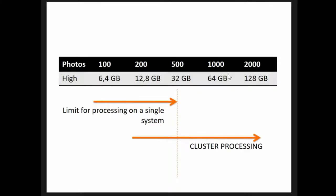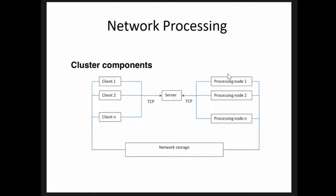When you want to process with a cluster in Photoscan, it divides your chunks into small projects and distributes them over the network file system, running different copies of Photoscan. If you have a small project, it is going to use only one node. But if you have a project with thousands of pictures, it will divide them across the nodes. That's the theory.